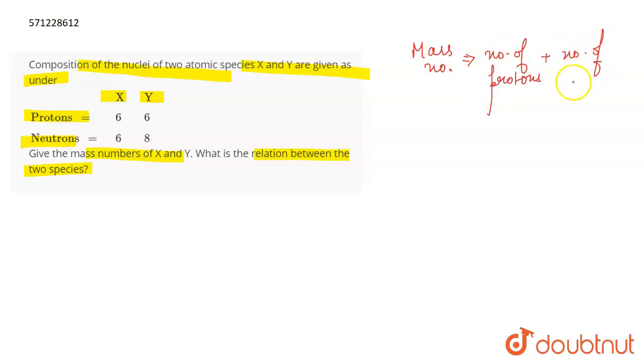So if we talk about X, how many protons does it have? Six. How many neutrons does it have? Six. So this becomes 12. If we talk about Y, Y has six protons and eight neutrons, so this becomes 14.